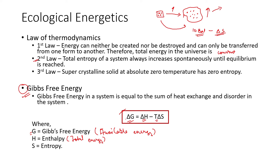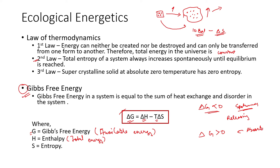This equation gives an idea about whether a reaction will be spontaneous or not. When ΔG is less than zero, the system is spontaneous — it is moving around, releasing energy. When ΔG is greater than zero, it is absorbing energy and requires energy. When ΔG equals zero, it is in equilibrium with minimal reaction.